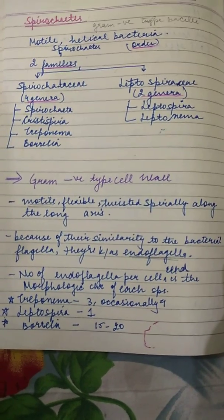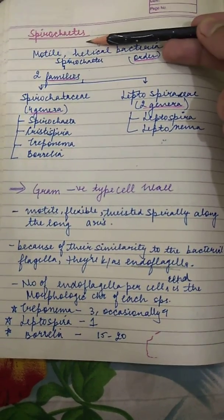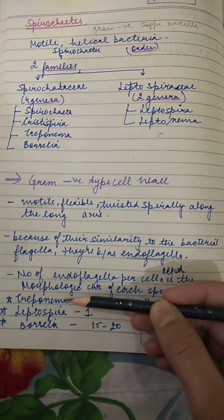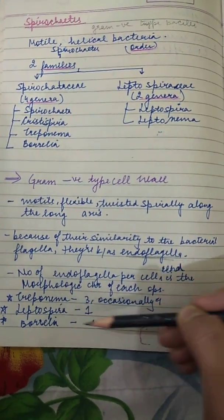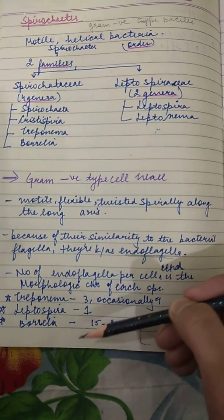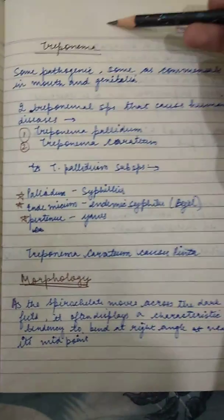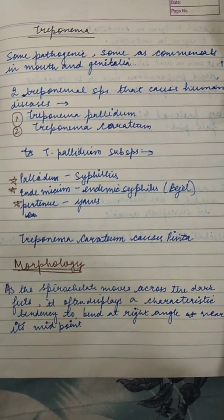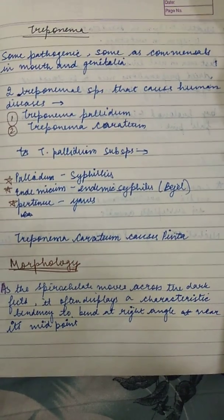We use the number of endoflagella per cell to identify various species of spirochetes. If a cell has three to four endoflagella, the species will be Treponema. If it has one, it will be Leptospira. If it has many endoflagella — like 15 to 20 — it will be Borrelia.